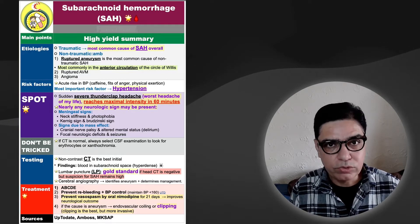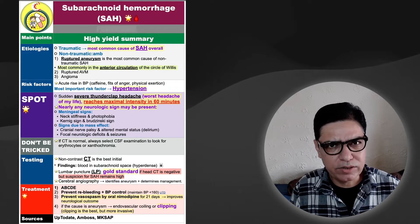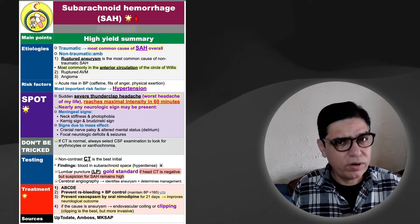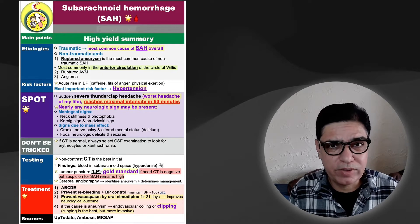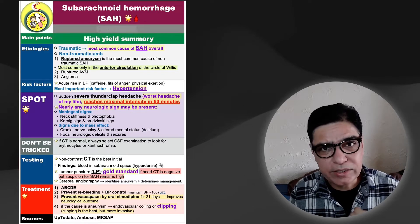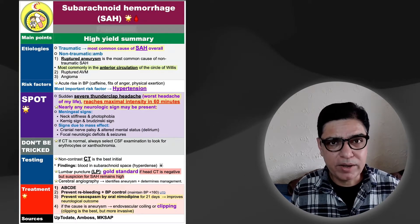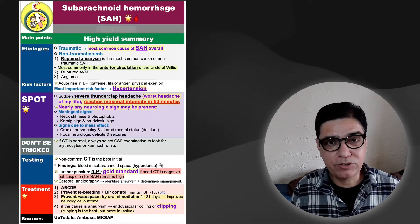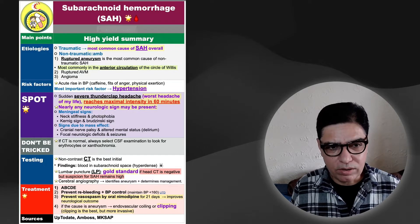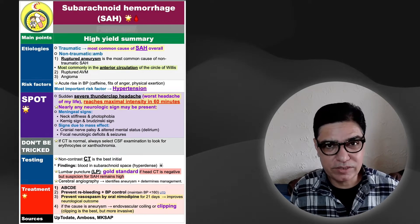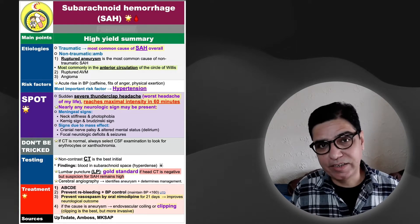The most important risk factor is hypertension. Whether due to hormonal problems, kidney disease, or any other cause, high blood pressure is by and large the most important risk factor. Acute rises in blood pressure — from caffeine intake, temper tantrums, or severe physical exertion — can also trigger subarachnoid hemorrhage in patients with pre-existing or predisposing conditions.